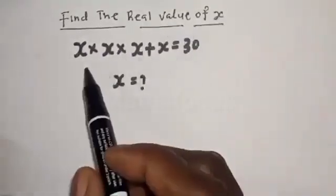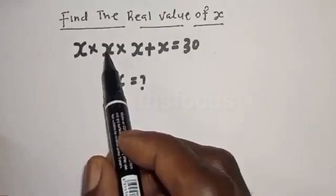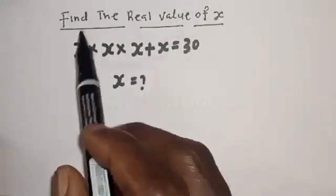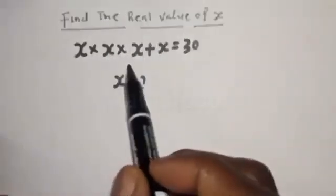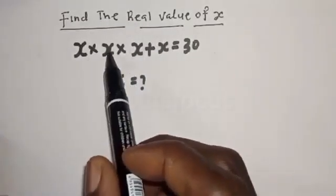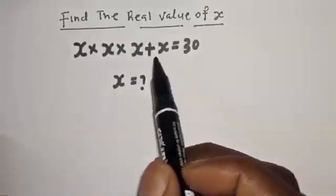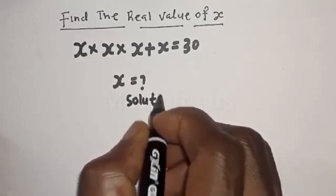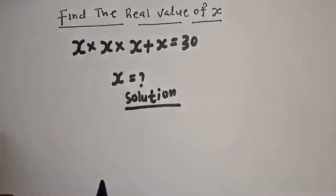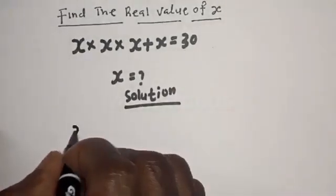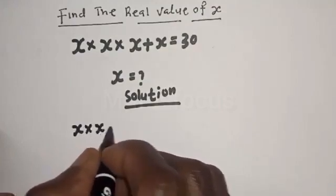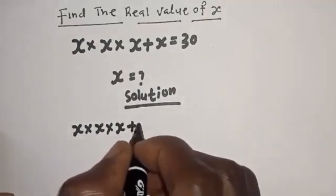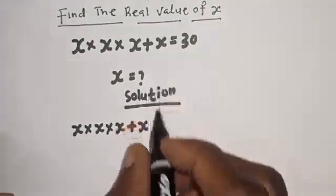Find the real value of s. s times s times s plus s is equal to 30. We want to find the value of s from this equation: s multiplied by s multiplied by s plus s is equal to 30.